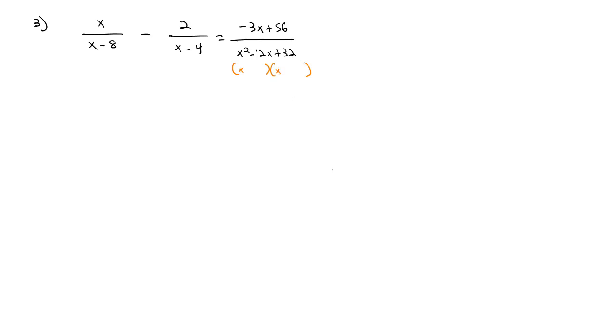x squared is x times x, and 32 is 8 times 4, and if they're both negative, that gives me the 12x in the middle. By the way, to help with your factoring, if you look at the other denominators, that might give you a hint on what to look for for your factors.